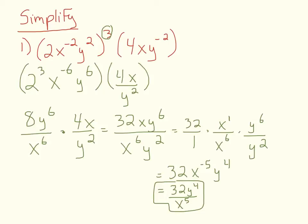So we did a few of the properties here — we distributed an exponent value to a product, we dealt with negative exponents, and we used the quotient property as well. That was an example of simplifying a monomial. Now let's say we have something such as a binomial or a trinomial and we have to simplify it. So let's simplify a polynomial.